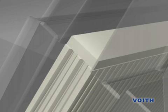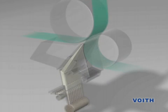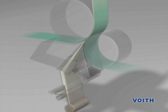In the head box nozzle the suspension is then brought together again, accelerated to jet velocity and brought onto the wire with a jet thickness of approximately 8 mm. By adjustment of the slice by fractions of millimeters, the jet angle and thus fiber orientation are controlled. The tensile strength of the paper can be controlled by specific regulation of the differential speed between jet and wire.